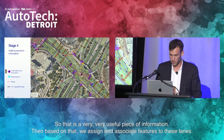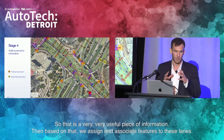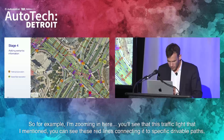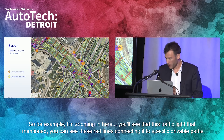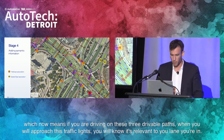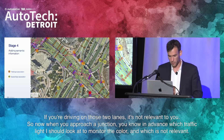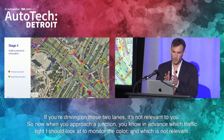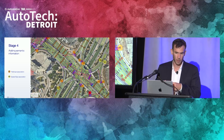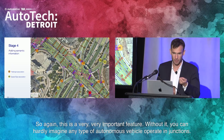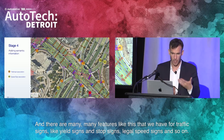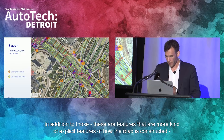Based on that, we assign and associate features to these lanes. For example, you can see the traffic light I mentioned, with red lines connecting it to specific drivable paths. This means if you're driving on these three drivable paths, when you approach this traffic light, you will know it's relevant to the lane you're in. If you're driving on the other ones, it's not relevant. So when you approach a junction, you know in advance which traffic light to monitor for color and which is not relevant. This is a very important feature — without it, you can hardly imagine any autonomous vehicle operating at junctions. There are many features like this for traffic signs, yield signs, stop signs, legal speed signs, and so on.